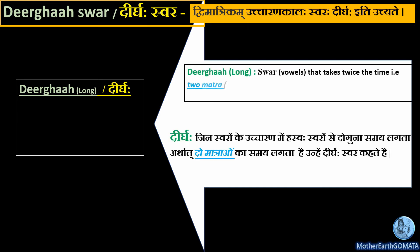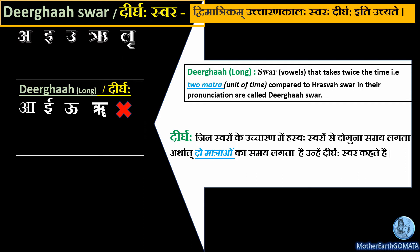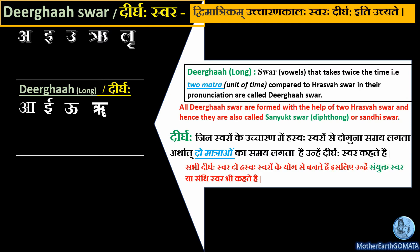Next, Dirgha Swar: 'Dvi matrikam uccaran kaal swara Dirgha iti uchyate', which means Swar that takes twice the time — that is two Matra compared to Hraswa Swar — in their pronunciation are called Dirgha Swar. Here we have five Mool Swar (also known as Hraswa Swar): A has one Matra; when pronounced with two Matra it becomes AA. E has one Matra; with two Matra it becomes EE. R has one Matra; with two Matra it becomes RR. The Swar 'Li' does not have any Dirgha form. As per the sutra, all Dirgha Swar are formed with the help of two Hraswa Swar and are hence also called Saiyukt Swar or Sandhi Swar.